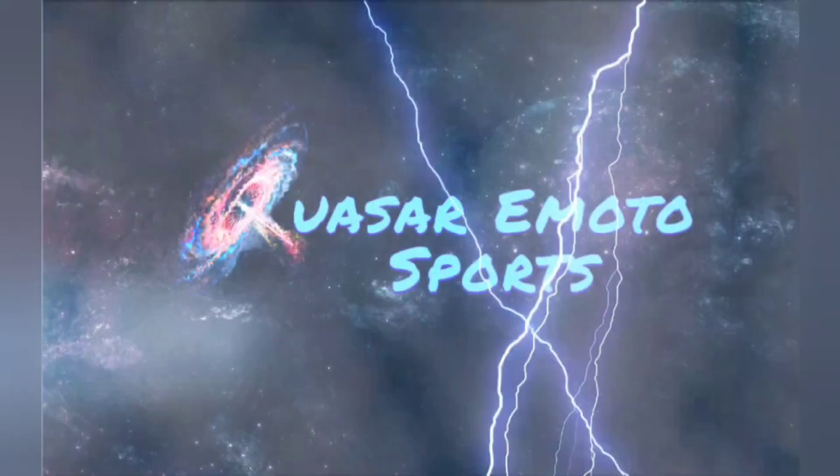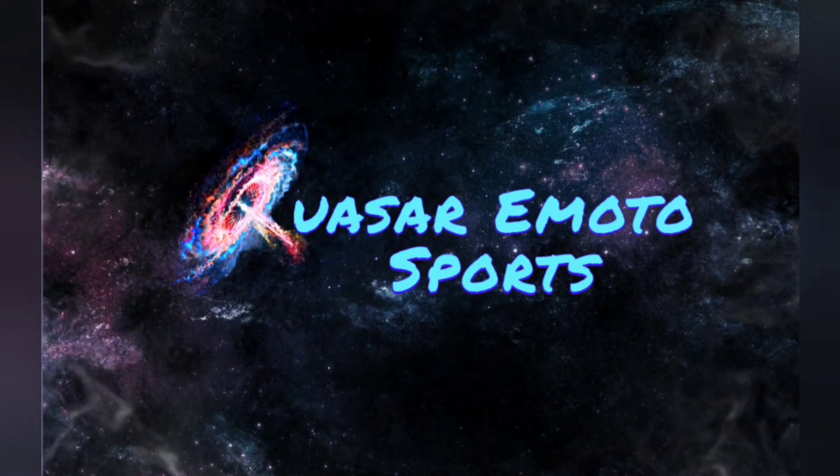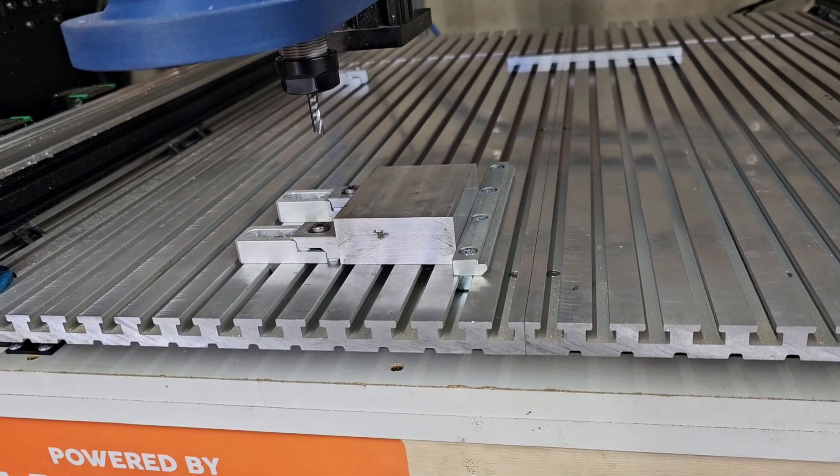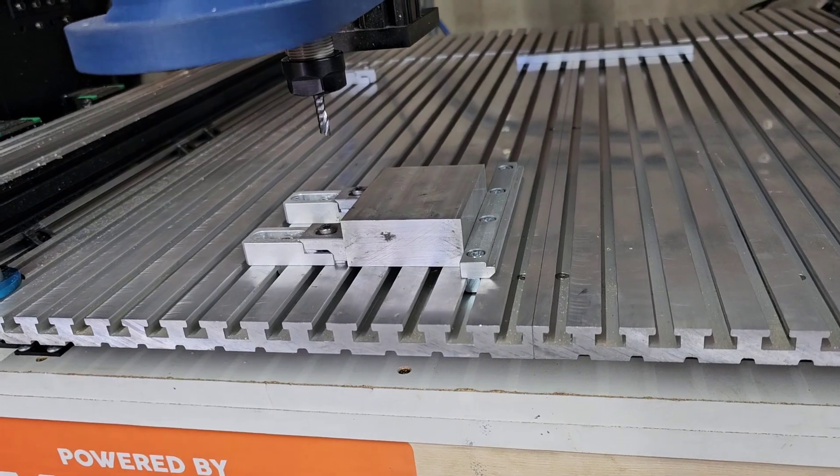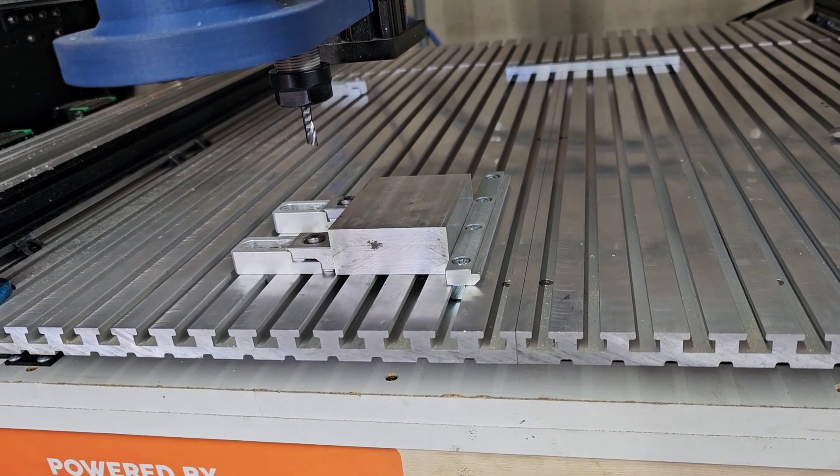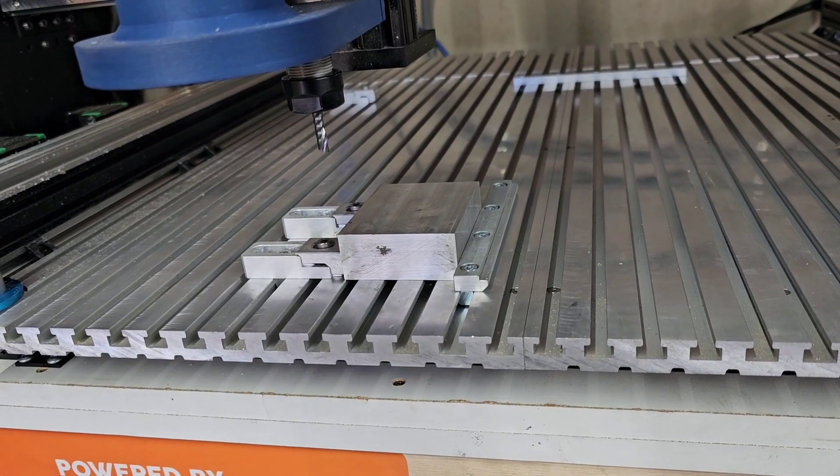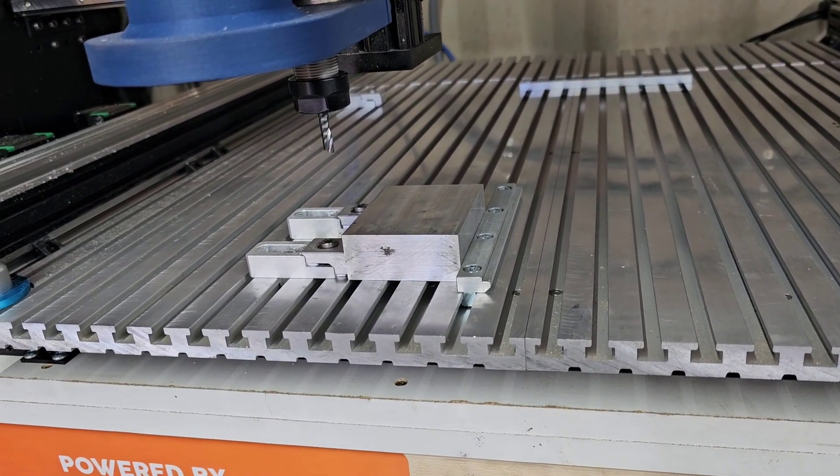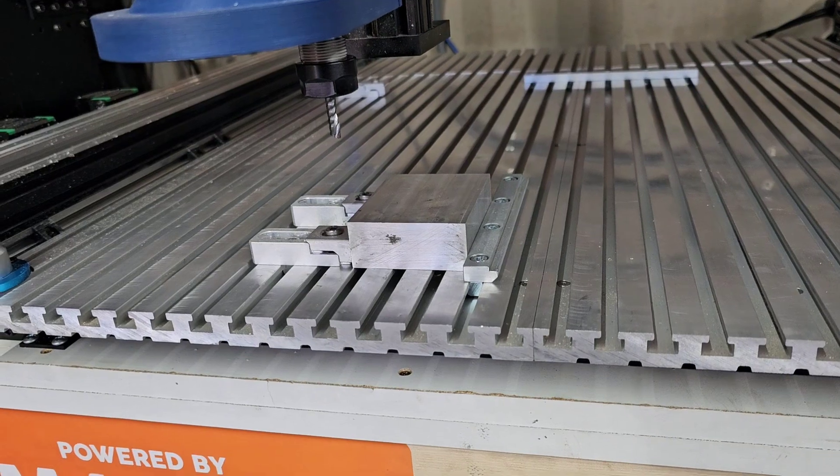Quasar E-Motosports. Alright guys, now we're going to test what this machine really can do. I'm not pushing it too hard, but we're going to try a 2,000 chip load at 18,000 RPM and do some adaptive clearing, some nice contouring, and we'll see how it goes.